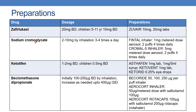The next drug is sodium cromoglycate. The dose is 2 to 10 mg by inhalation, 3 to 4 times a day. The preparations are Fintal inhaler, 1 mg metered dose aerosol, 2 puffs 4 times daily, and Chromal 5 inhaler, which contains 5 mg metered dose aerosol, 2 puffs 4 times daily.